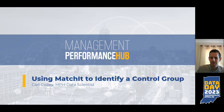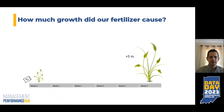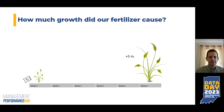Let's start first with a thought experiment. So let's say we're gardening — we've just purchased a new fertilizer and we want to try it out on our plants. We're interested in measuring the amount of growth our plants see because of the fertilizer. So we go out to the garden one week, give the fertilizer to the plant, and then come back five weeks later and see that our plant has grown five inches.